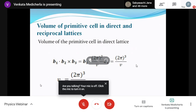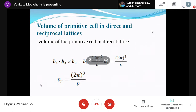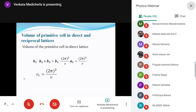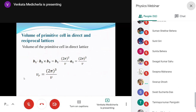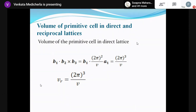A second student asks: for a two-dimensional lattice, how do we calculate the reciprocal lattice? The instructor explains that for a3 we take a vector along k-hat for convenience, to use the same cross-product logic: b1 = 2π(a2 × a3)/V. Without taking that artificial third vector you can still find the reciprocal lattice in 2D, but it is mathematically more complicated.